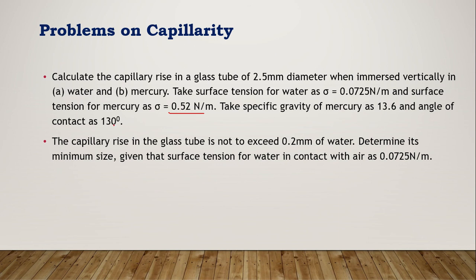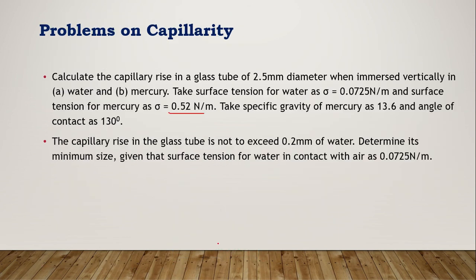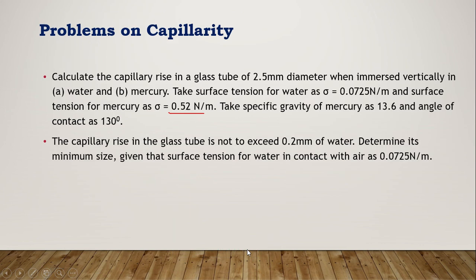For mercury, use h = 4σcosθ / (ρgd). Take θ = 130° if given (otherwise use 128°). Sigma for mercury = 0.52. Density of mercury: specific gravity is given as 13.6, so ρ = 13.6 × 1000. Substitute ρ, g = 9.81, and d = 2.5 × 10⁻³ to get the capillary fall value.